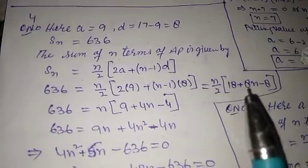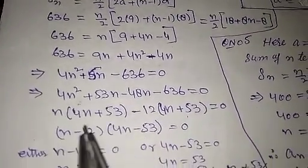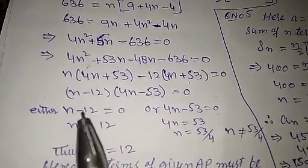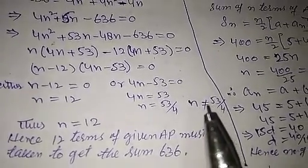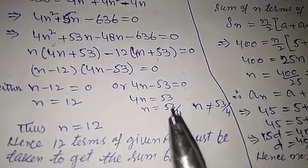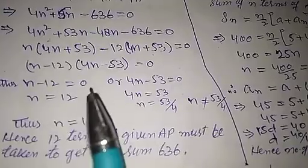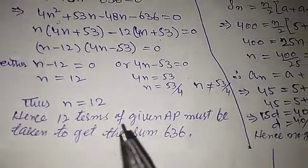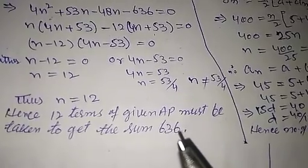Simplifying, we get n/2 × [18 + 8n − 8]. This simplifies further to the equation (n − 12)(4n − 53) = 0. So either n − 12 = 0, giving n = 12, or 4n − 53 = 0, giving n = 53/4. Since the number of terms must be a whole number, n = 12. Thus the number of terms required to give a sum of 636 is 12. This was Question Number 4.